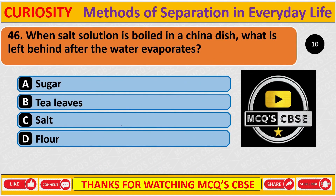Question: When salt solution is boiled in a china dish, what is left behind after the water evaporates? Correct answer is C: Salt.